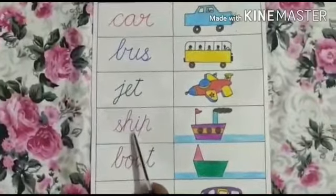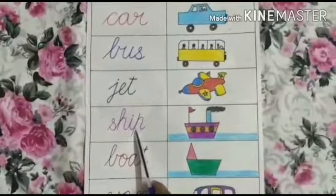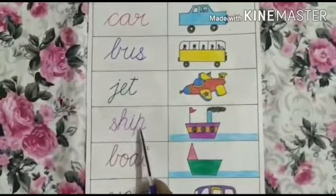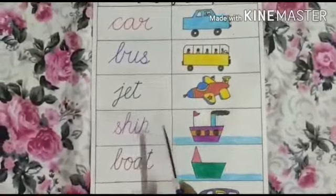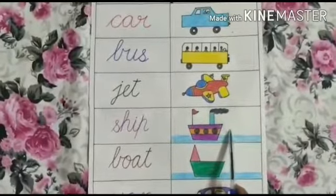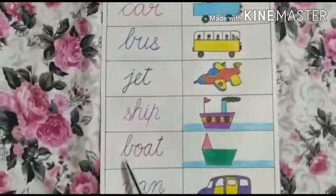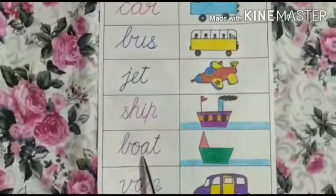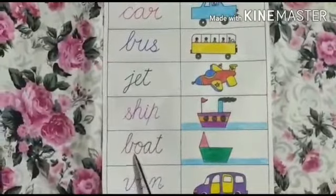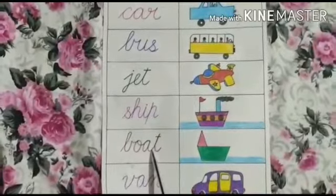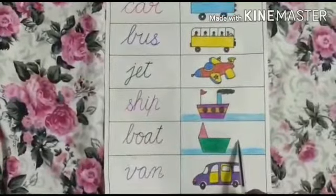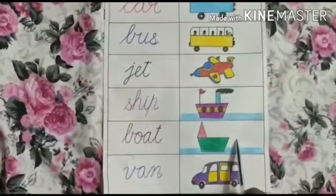S-H-I-P. Ship. And ship is a water transport. Very good. B-O-A-T. Boat. And boat is also a type of water transport.